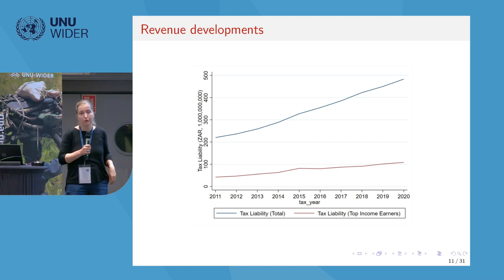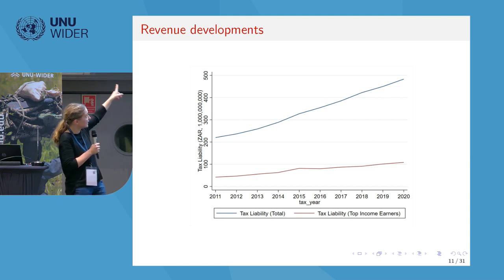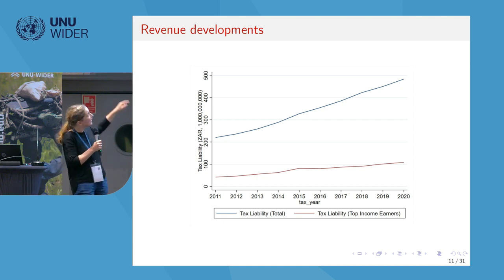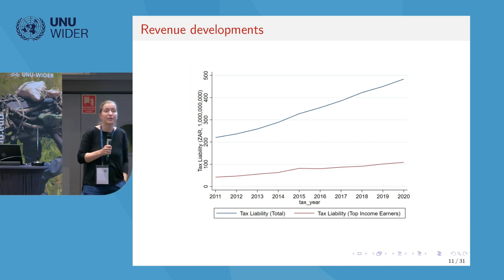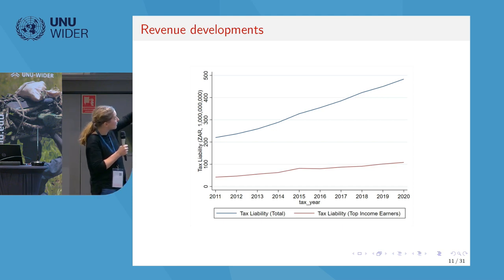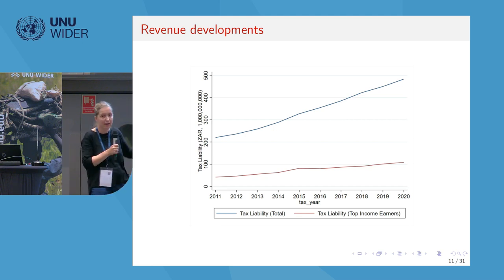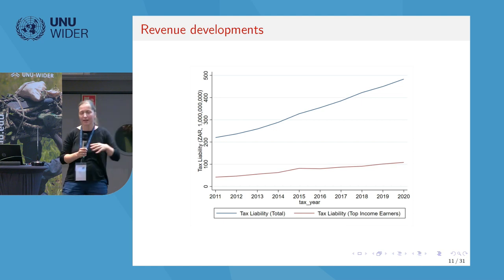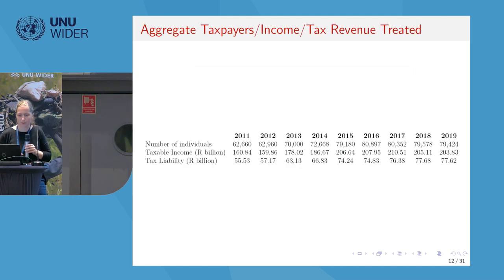Here you see pure descriptive revenue collection in the PIT system in South Africa across tax years starting in 2011 until 2020. The blue line gives overall PIT revenue collection, and the red line gives revenue collection from the treated taxpayers — those above 1.5 million rand income. The first treated year was 2017-2018, indicated as 2018 in the graph. What you see looks pretty flat — the increase in the top marginal tax rate does not show up as a takeup in tax revenue collection from this group of taxpayers.